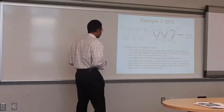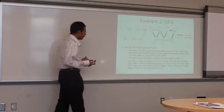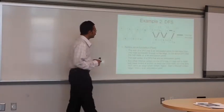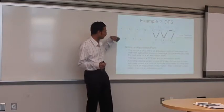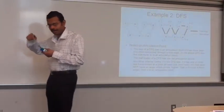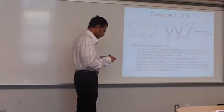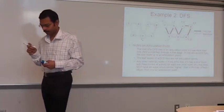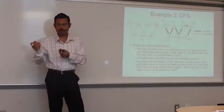Depth first search was started last time. Given a graph, you want to run it starting from one particular vertex. If I don't specify which vertex, start from the lowest alphabet or lowest number. You can start from A, the lowest alphabet. I am going to push vertices on the stack as you visit them and then pop them out. The first number is the order in which you are pushing things on the stack, and the second one is the order you are popping out from the stack.